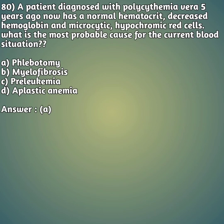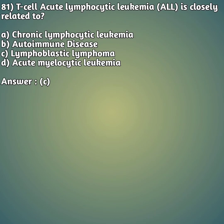Moving on to our 80th question - a case study. A patient diagnosed with polycythemia vera five years ago now has a normal hematocrit, decreased hemoglobin, and microcytic hypochromic red cells. What is the most probable cause for the current blood situation? Option A: phlebotomy. Option B: myelofibrosis. Option C: preleukemia. Option D: aplastic anemia. The right answer is answer A - phlebotomy.